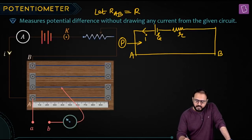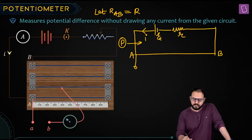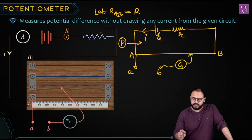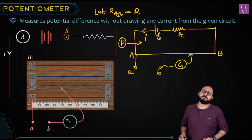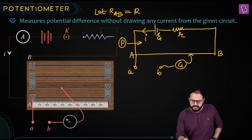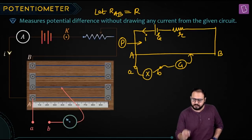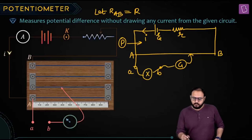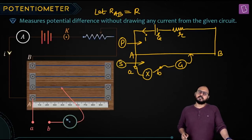From A you open a portal — open terminal small A. And from B, via galvanometer, you connect it to a jockey. Jockey means movable point. And between A and B, you connected something — whatever you want — call it X. This is the secondary circuit.